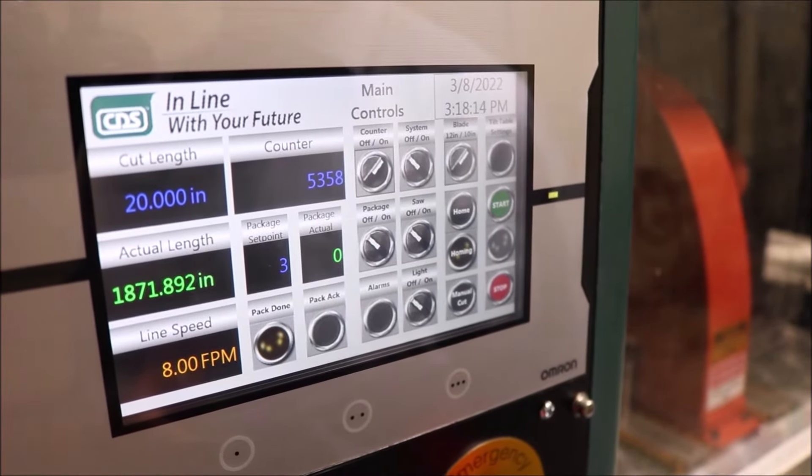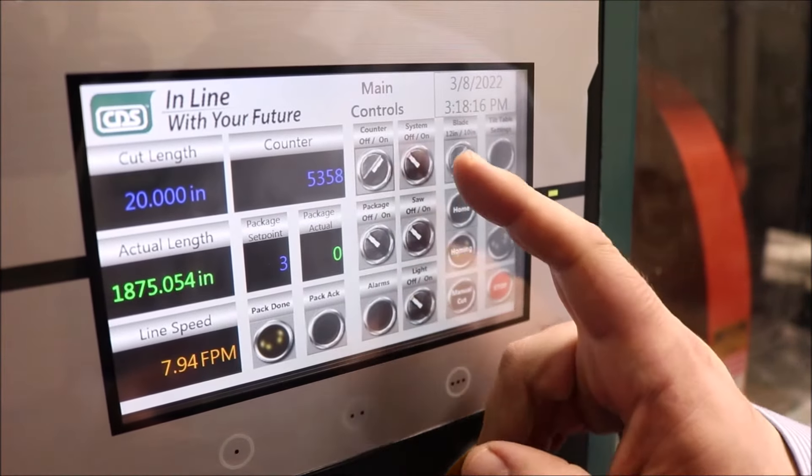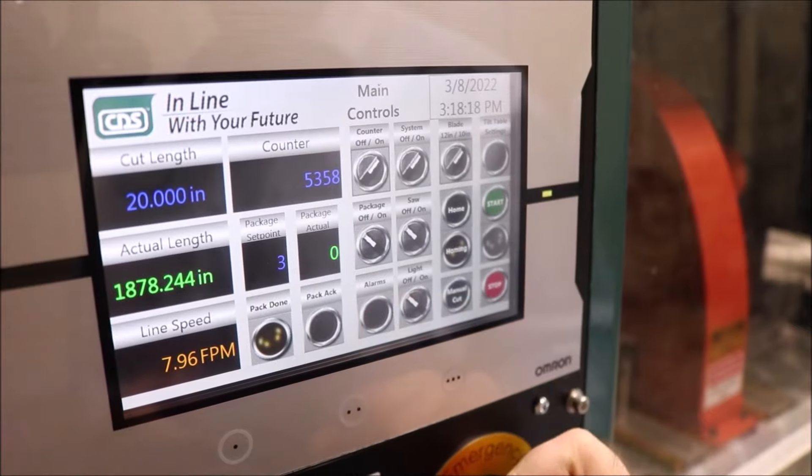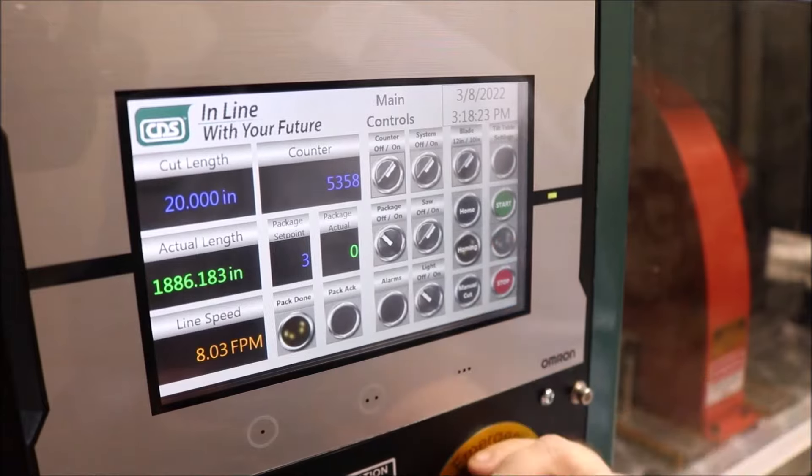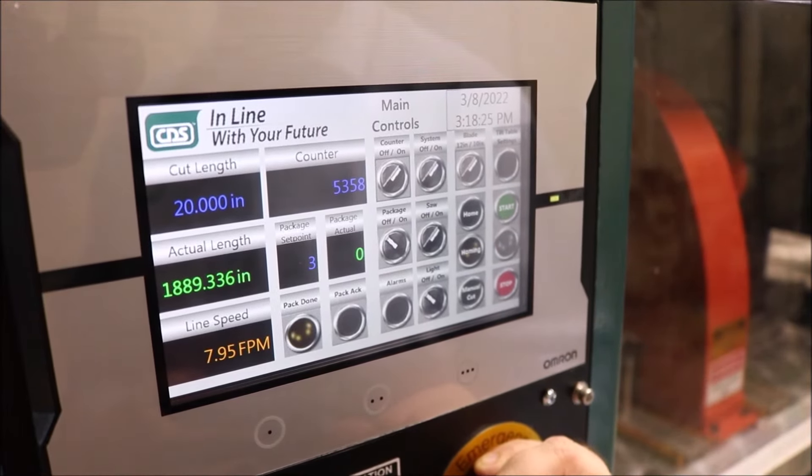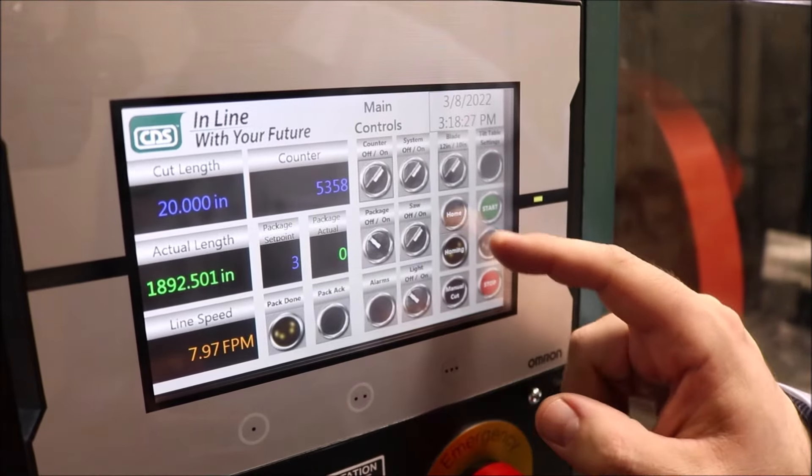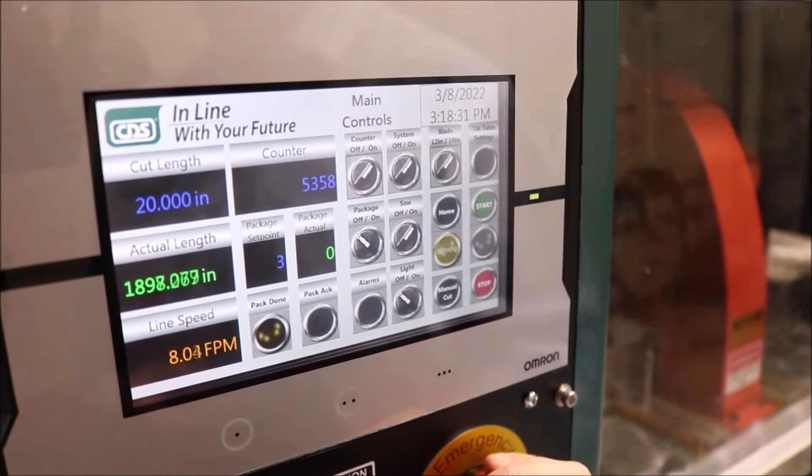Now let's start the machine. First thing that we will do is do a system on, and then we will activate the saw. As you may hear, at this point the saw is running. Then we will hit the home button to bring the machine home.